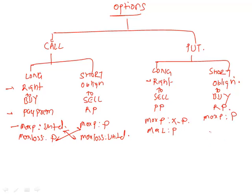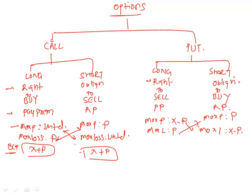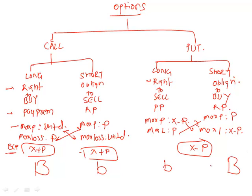For a long put, maximum profit is X minus P — you make profit when the price of the underlying becomes zero, allowing you to sell at strike price X but having paid premium P. Maximum loss is the premium. For a short put, maximum profit is the premium and maximum loss is X minus P. The breakeven for a call option is X plus P for both long and short sides, and for a put option the breakeven is X minus P.